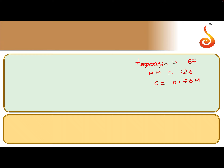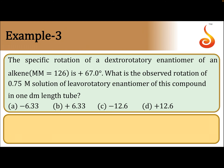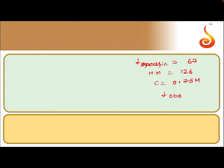They asked us to find out alpha observed — what is the observed rotation? The formula is: alpha observed is equal to alpha specific into C into L. Alpha specific is 67.